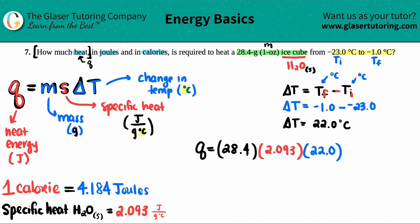So I have my three values. Let's calculate it out. So 28.4 times 2.093 times 22. With these, don't be afraid if you see a big number. Q values, especially the ones that are in joules, are going to be relatively large.